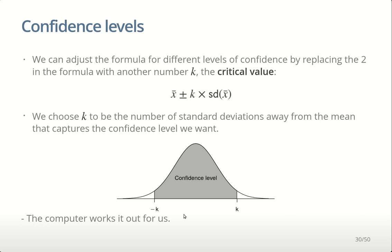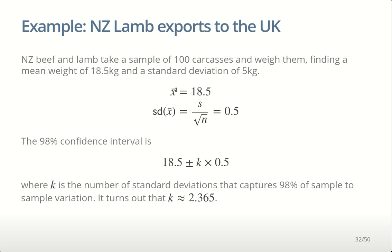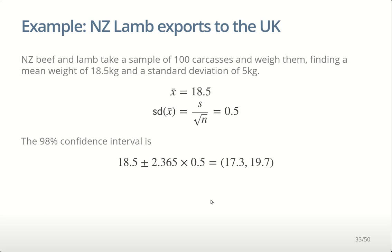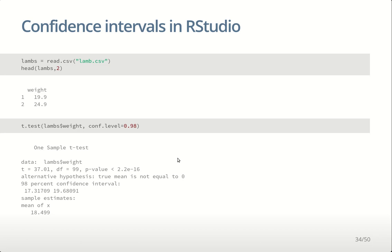To find a 98% confidence interval by hand, we work out the sample mean and standard deviation of the sample mean the same way. The confidence interval is 18.5 plus or minus k times 0.5, where k is bigger than 2 — since 2 gives 95% certainty and we want more certainty. On the computer, we just change the confidence level to 0.98 to be 98% confident, and we get the same answer.